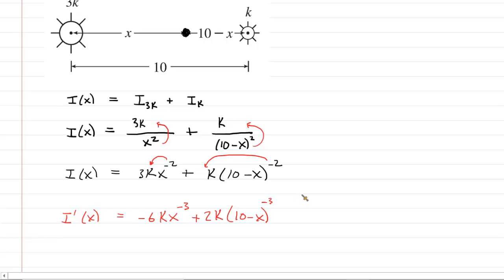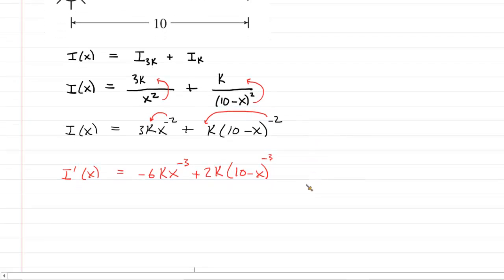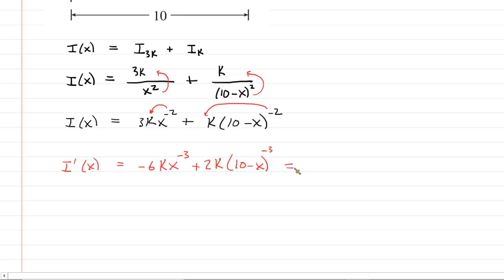Now we next need to find a critical point. And to find the critical point, we would set our derivative equal to 0. So we'll do that next. Remember that K is a constant. So it might be useful for us to just divide it out of our way.